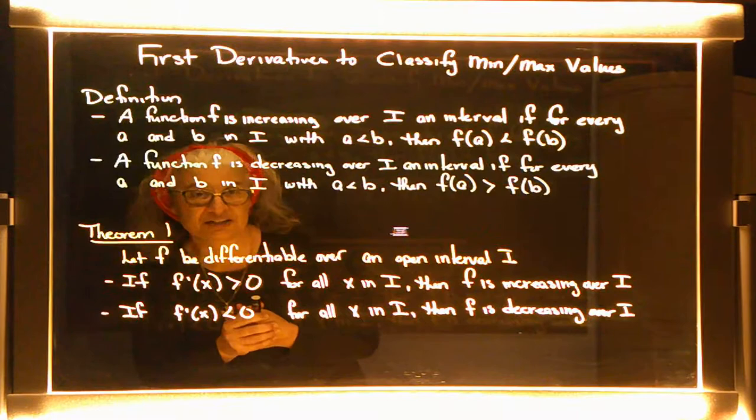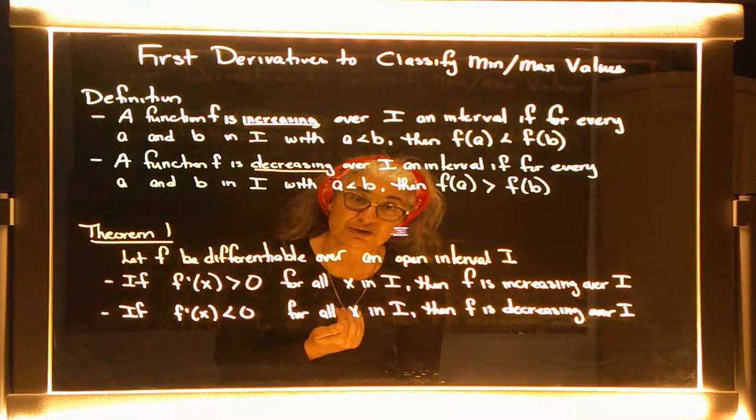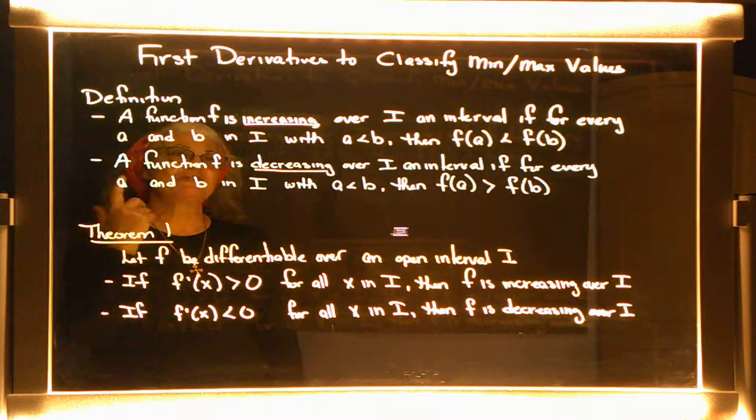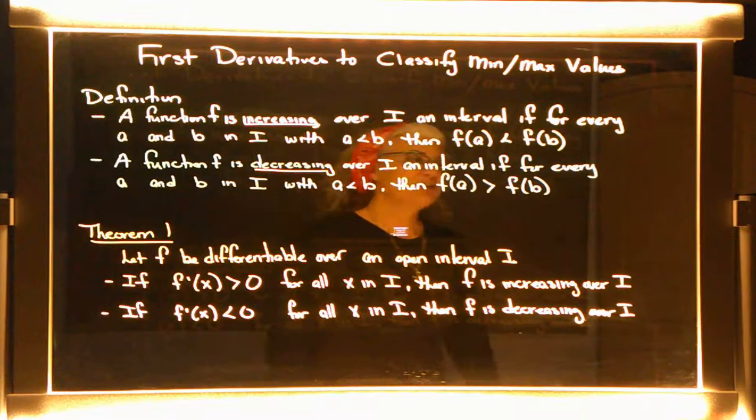Let's look at this first definition, which deals with increasing and decreasing — recognizing how a function is considered increasing or decreasing. The first part says: a function f is increasing over interval i if for every a and b in i with a less than b, then f of a is less than f of b.